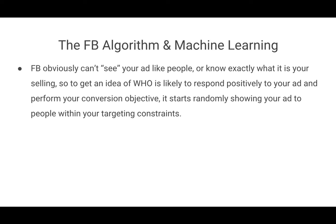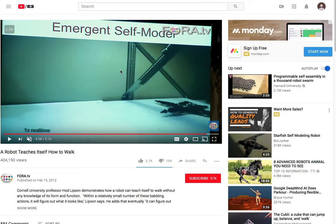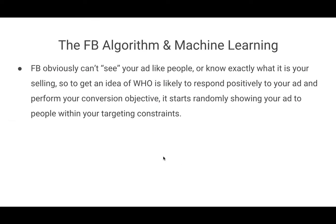Facebook obviously can't see your ad like a human does. You can't just tell Facebook "I'm trying to sell sneakers to certain demographics." Facebook can't know exactly what it is you're selling. So to get an idea of who is most likely to respond positively and perform your conversion objective, Facebook will just start randomly showing your ad to people within your targeting constraints — just like the robot was randomly flailing around at the beginning.